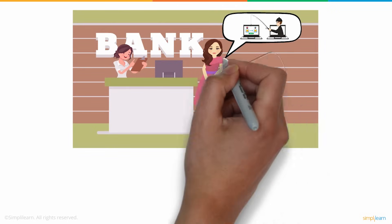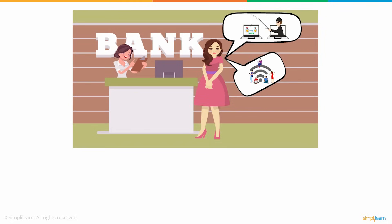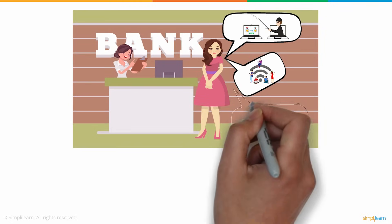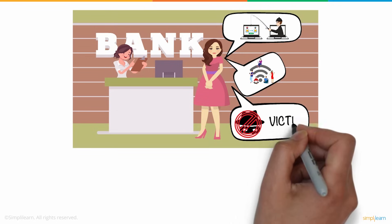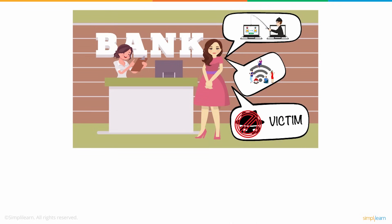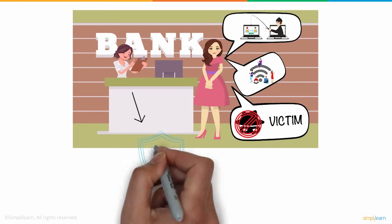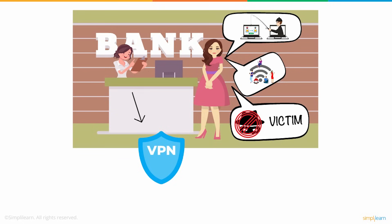She then realized that the public Wi-Fi she used might have caused her this trouble. Jude wishes that had her bank transfer escaped the hacker's eyes, she would not have been a victim of a cyber attack. Bank officials advise her to use a VPN for future transactions, especially when connecting to an open or public network.